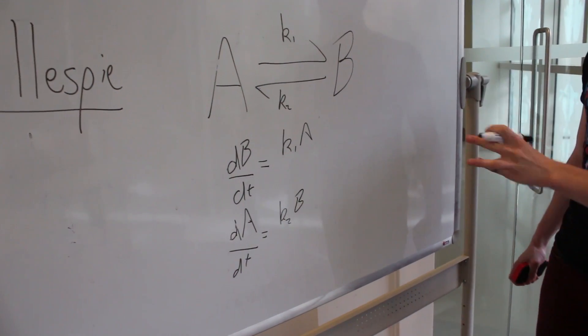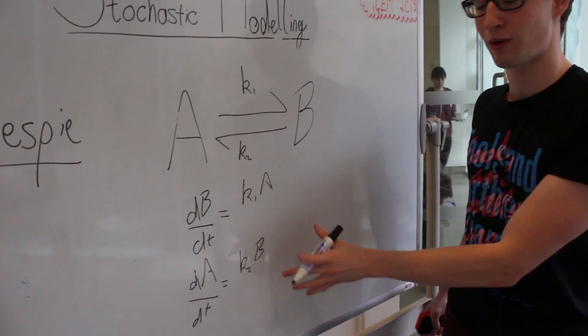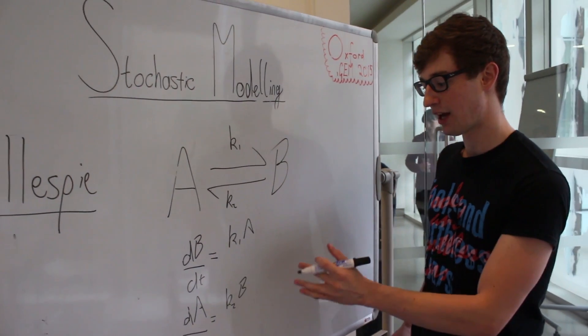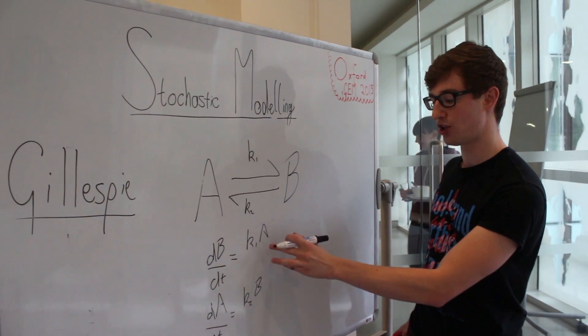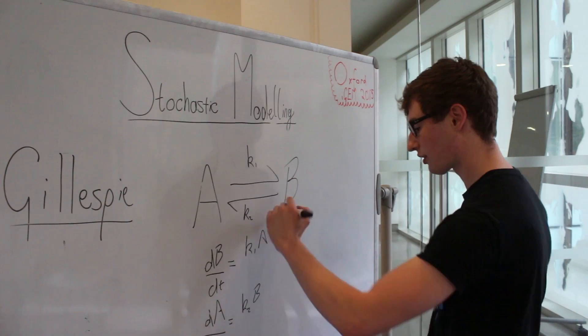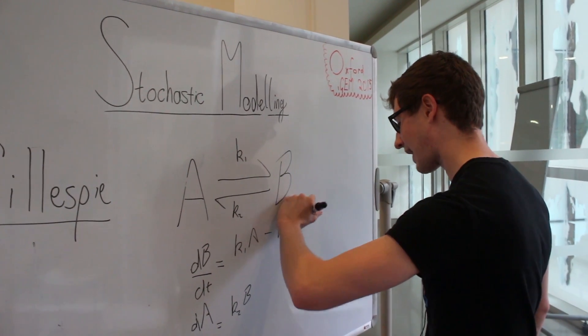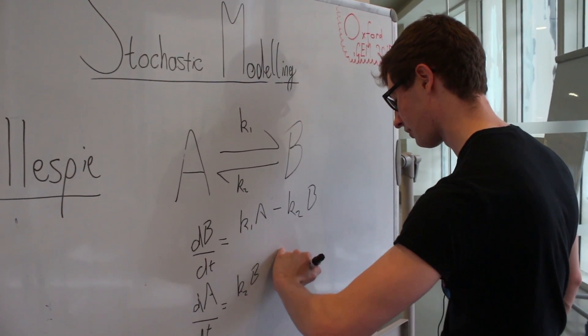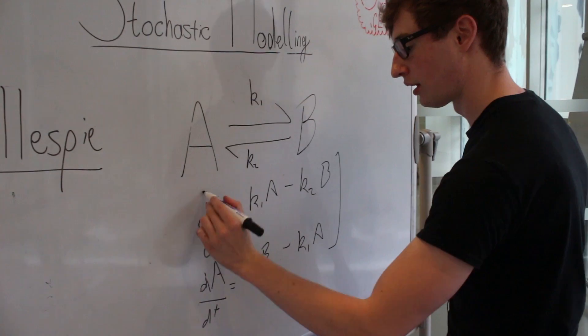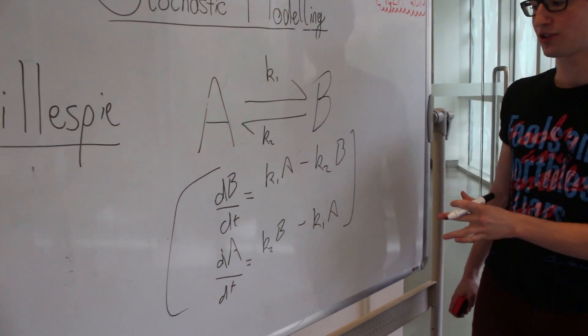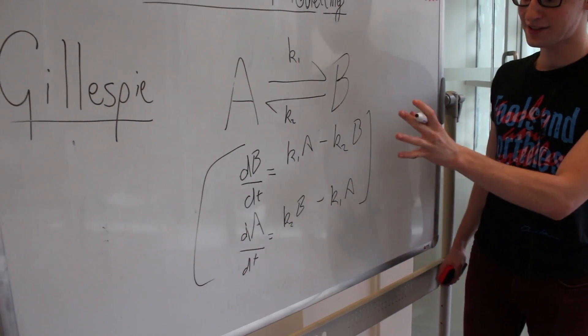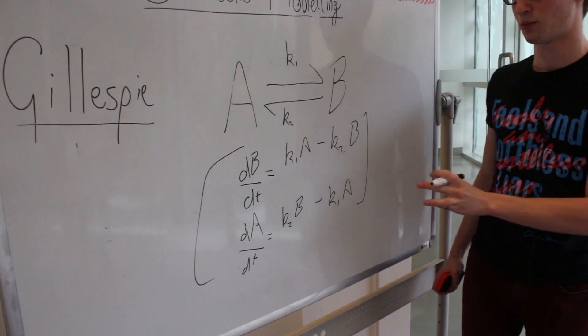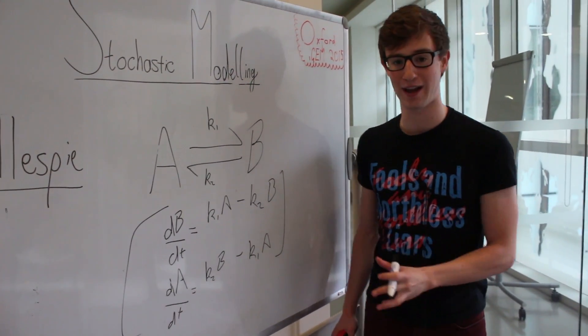But what we've neglected to think about is that each of these equations are coupled, they're linked, and in fact as B is produced it also decays back into A. So we can complete these equations by adding in the bits that we've missed. And now we have our system of equations that we want to model. This is what would be a deterministic model and that is the system that we're going to look at.